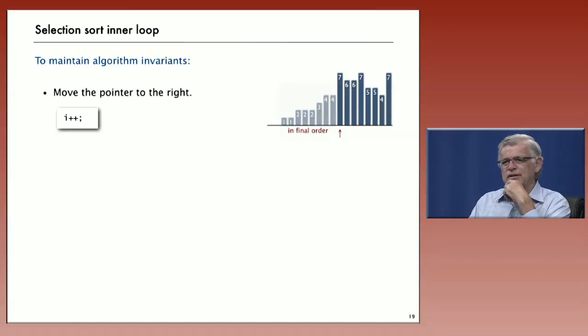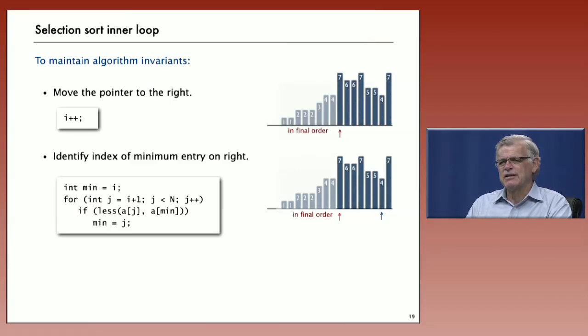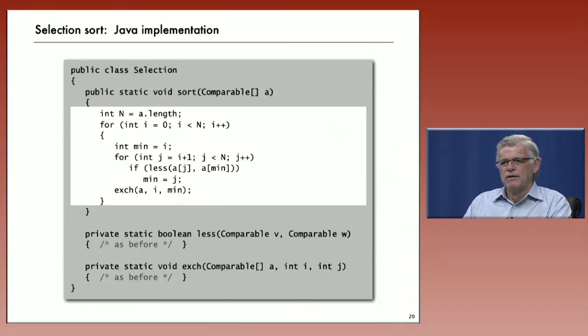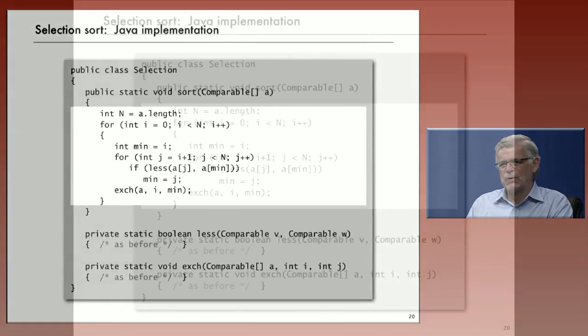So the code implements the invariants. To move the pointer to the right we increment i. Now the invariant might be violated so we have to fix it. It might be violated because you might have an element to the right of the pointer that is smaller than the element on the pointer. So what we have to do is identify the index of that minimum entry and exchange it. Then once we've exchanged it, again we've preserved our invariant. After that point, no element to the left of the pointer is going to change and there's no smaller element to the right. And that gives us immediately our code for the selection sort implementation.